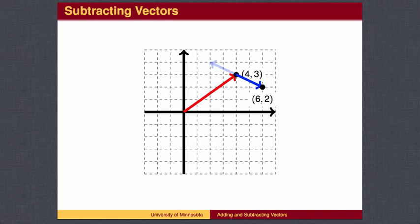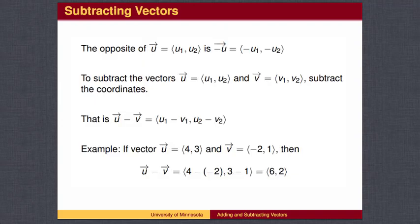Subtracting the blue vector from the red vector is equivalent to adding a vector which points in the opposite direction as the original blue vector. We subtract vectors by subtracting coordinates.